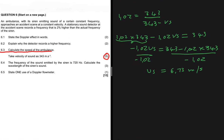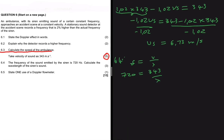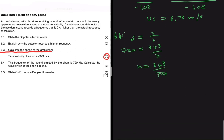Now let's do 6.4 quickly. Given that the frequency emitted by the siren is 720 Hz, we need to calculate the wavelength of the siren sound. Using the formula: frequency = velocity / wavelength, we have 720 = 343 / λ. Making λ the subject: λ = 343 / 720 = 0.48 meters.